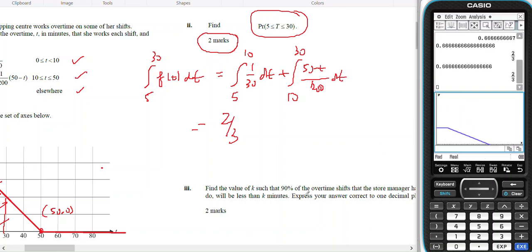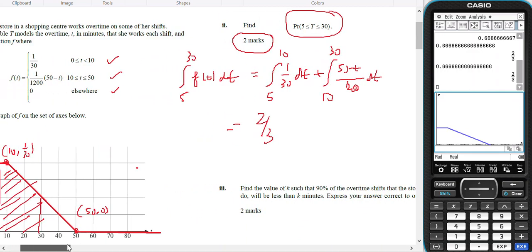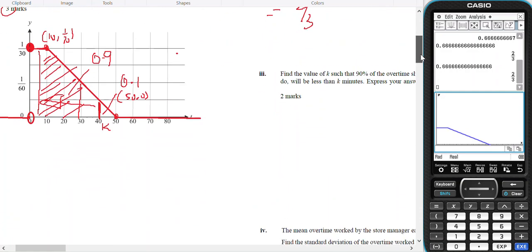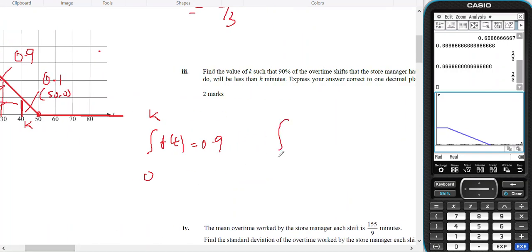Okay, find the value of k, so it's the 90% of the time shifts of the manager is less than k minutes. 90% is less than k minutes. So if I'm looking at this being k, all that back there is 0.9, therefore that there is 0.1. I could do that two ways. I could say the integral from 0 to k of f of t equals 0.9, solve for k, or I could say the integral from k to 50 of f of t equals 0.1, solve for k.